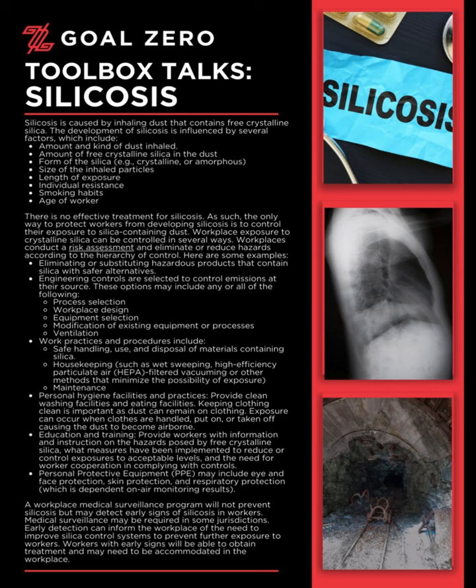Workplaces should conduct a risk assessment and eliminate or reduce hazards according to the hierarchy of control. Here are some examples. First: eliminating or substituting hazardous products that contain silica with safer alternatives.